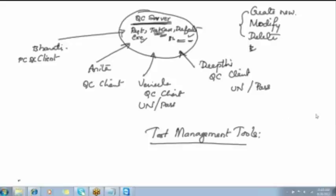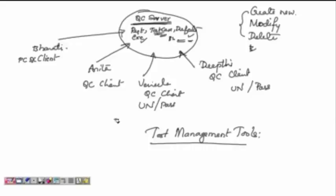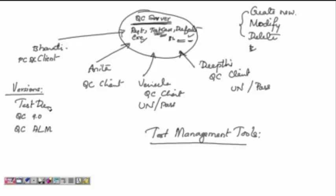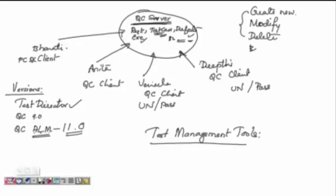Quality Center and Test Director are the same — Jaya's question answered. We have different versions of Quality Center. Some have Quality Center 9.0 installed; some have ALM installed. Previous versions were called Test Director, so Test Director and Quality Center are one and the same. The newest version, Quality Center 11.0, is called ALM — Application Lifecycle Management. Different versions have different names: first Test Director, then Quality Center, and the latest 11.0 is called ALM.